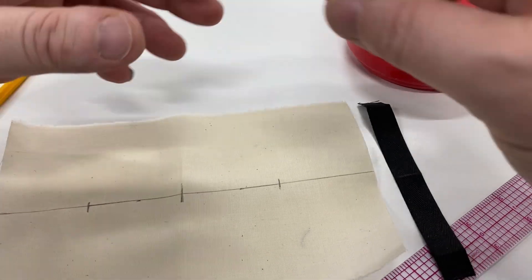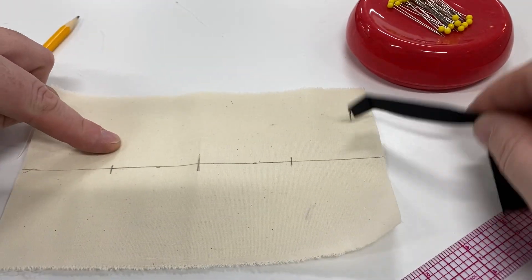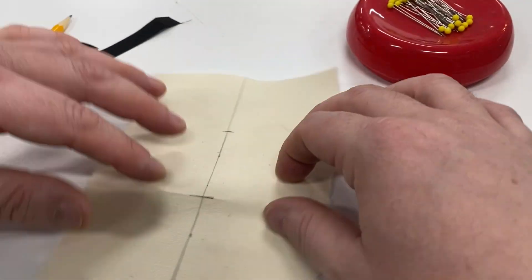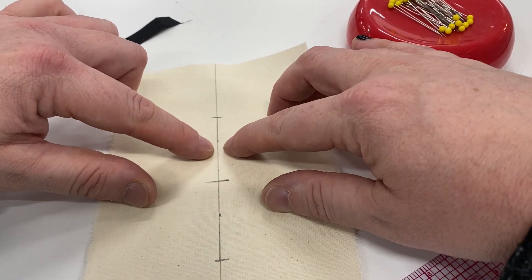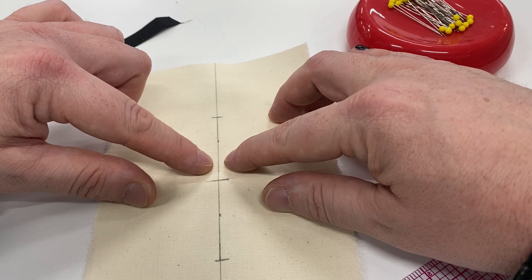Here's my middle point of my twill tape and the middle point of my piece I'm going to gather. Now what we're going to do is gather this fabric to this piece of twill tape. So the first thing you need to do is run gathering stitches straddling this line. I'd put them about an eighth of an inch away from each side. Let's sew that.